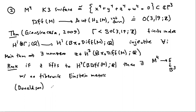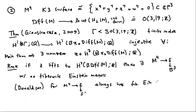In contrast, Donaldson showed that for a K3 bundle over the circle — if your base is only one-dimensional — you always have a fiber-wise Einstein metric. But I don't know whether any of these classes Z lift to the diffeomorphism group.